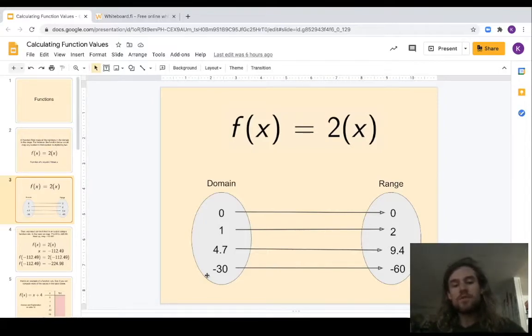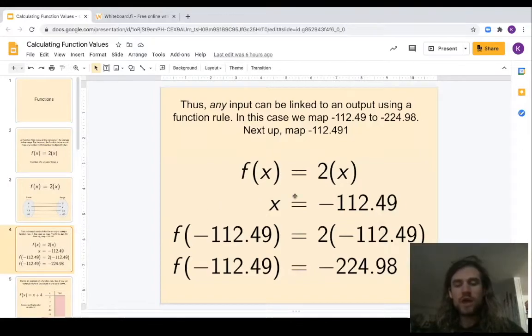And negative 30 would map to negative 60. So okay, here we go, here's another one. You can see kind of writing it out this way. Let's do a couple of examples.